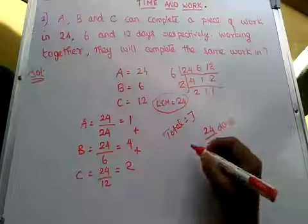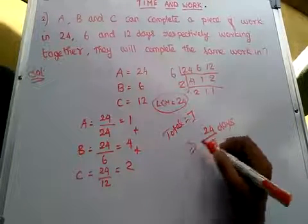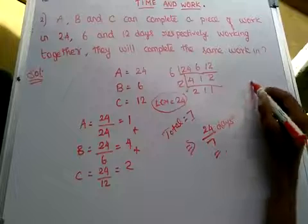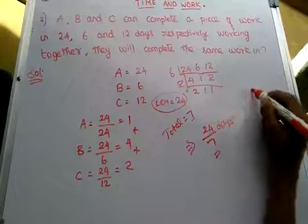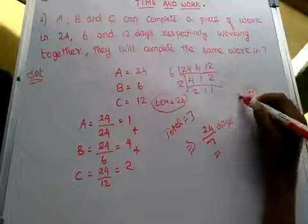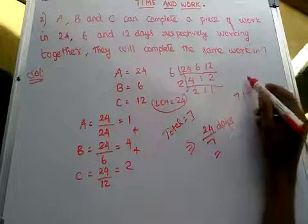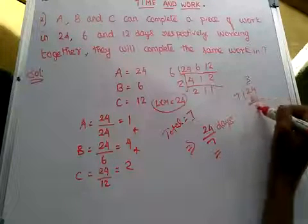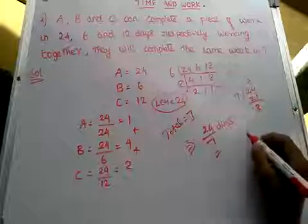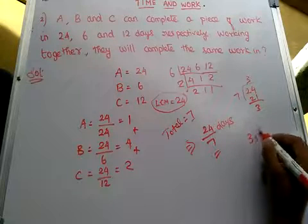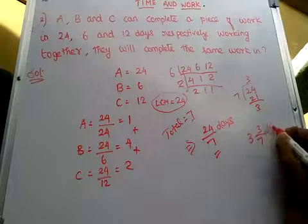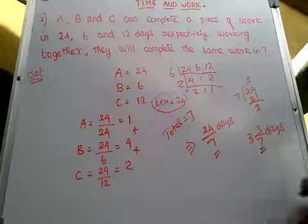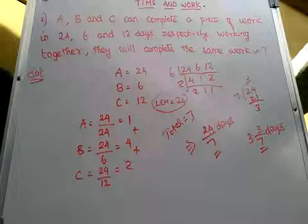The answer is 24/7 days. When you convert this into a mixed fraction: 7 times 3 is 21, remainder 3, so the answer is 3 and 3/7 days. This is the answer.